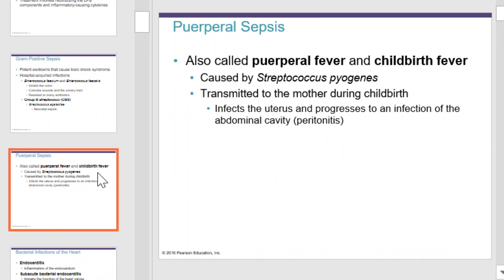Puerperal sepsis is called puerperal fever, and childbirth fever is caused by Streptococcus pyogenes. It can be transmitted to the mother during childbirth and infects the uterus, progressing to an infection of the abdominal cavity.